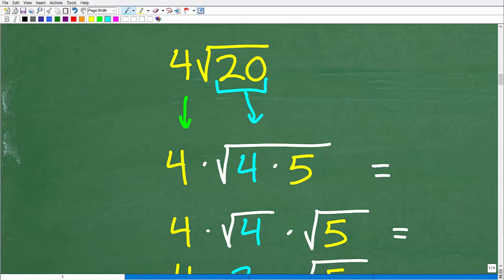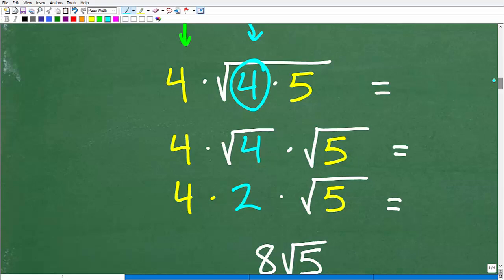So, now we're going to break up these individual square roots. So, the square root of 4 times the square root of 5. Again, square root of 4, that is a nice, beautiful, perfect square factor.